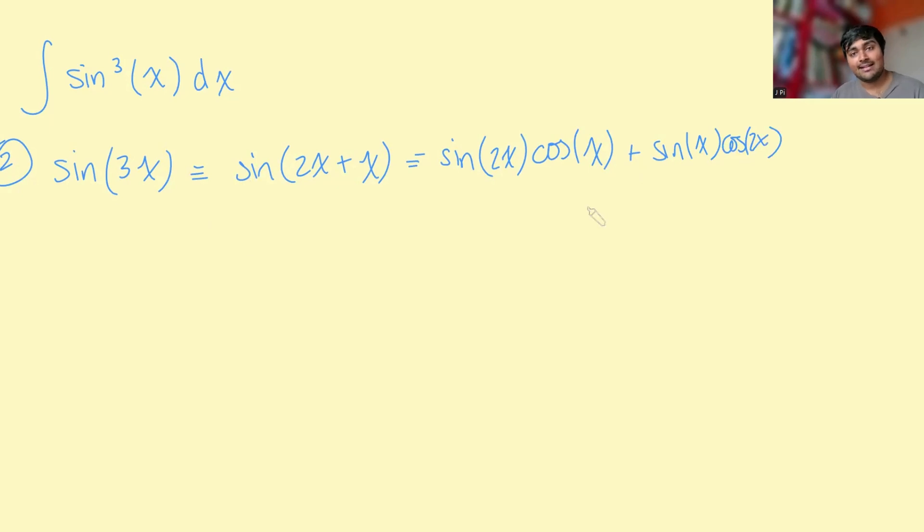Now, how do we simplify this and write this in terms of sine x? Well, we can use our double angle formula for sine 2x. So that's going to be 2 sine x cos x times this cos x here makes that cos squared x. And then this thing here is plus sine x times cos 2x. But we want to write everything here in terms of sine x. So what double angle formula should I use for cos 2x?